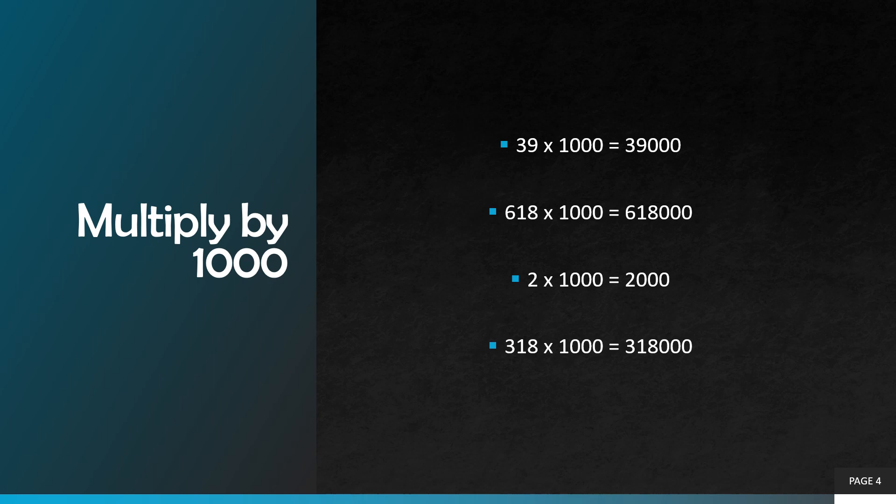Question number four: three hundred and eighteen multiplied by one thousand. We are going to add three zeros in our answer. Three hundred and eighteen multiplied by one is equal to three hundred and eighteen, so our correct answer will be three hundred and eighteen thousand.